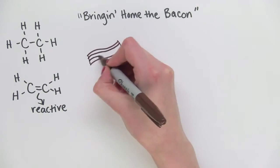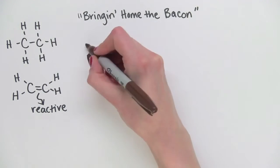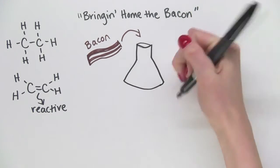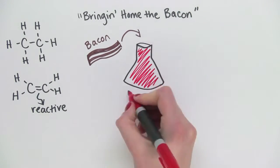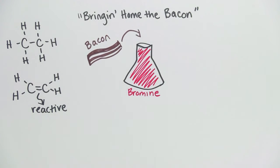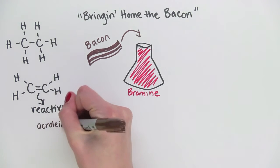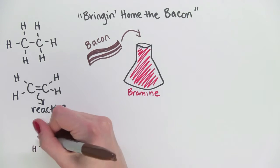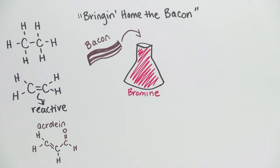So Dr. Dolan heats up a piece of bacon and adds it to a flask filled with bromine. Bromine reacts with anything that has a carbon-carbon double bond. This includes the acrolein that's produced when you cook bacon, which looks like this, as well as the unsaturated fat that's already present in the bacon.